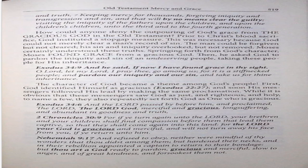The character of God became a theme among God's people. First, God identified himself as gracious (Exodus 22:27), and soon his messengers followed his lead by making the same proclamation. While it is obvious that these messengers saw God as just and righteous and holy, to name a few, they also repeatedly set forth God as one who is gracious. Exodus 34:6. And the Lord passed by before him and proclaimed, The Lord, the Lord God, merciful and gracious, long-suffering and abundant in goodness and truth.